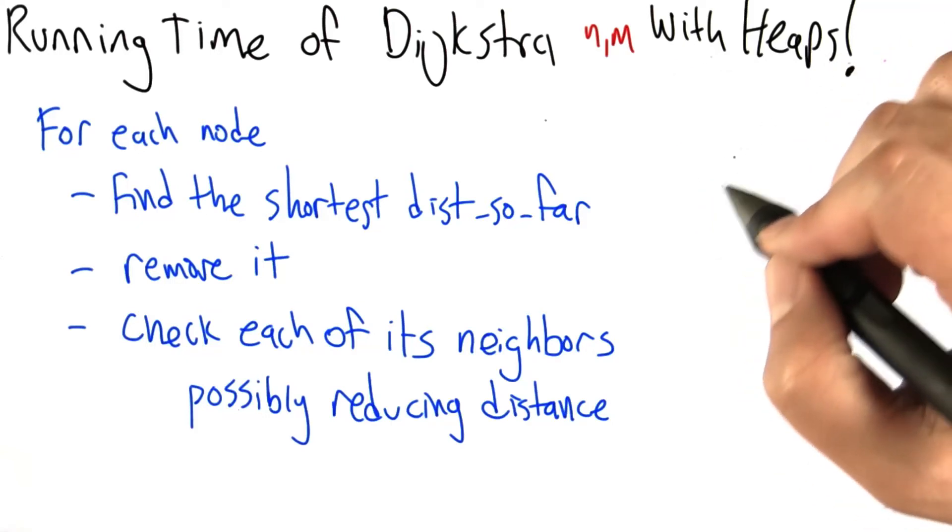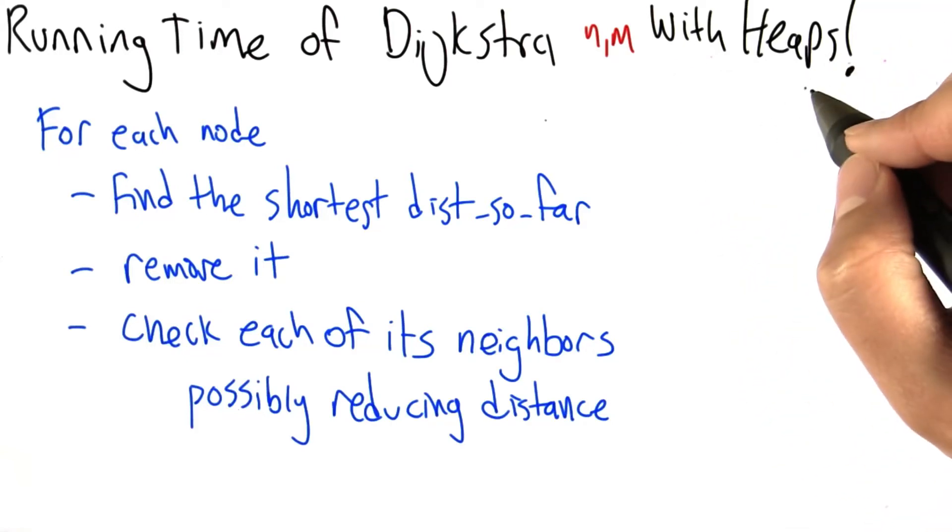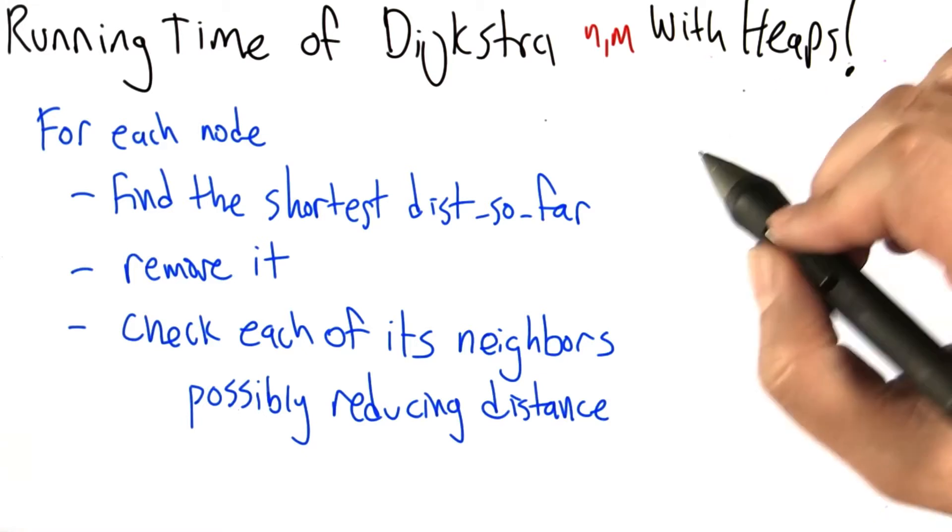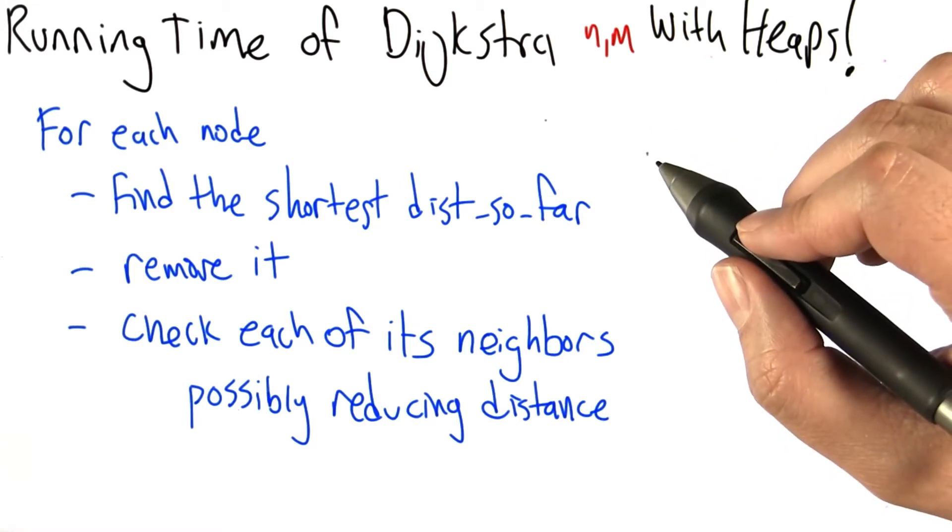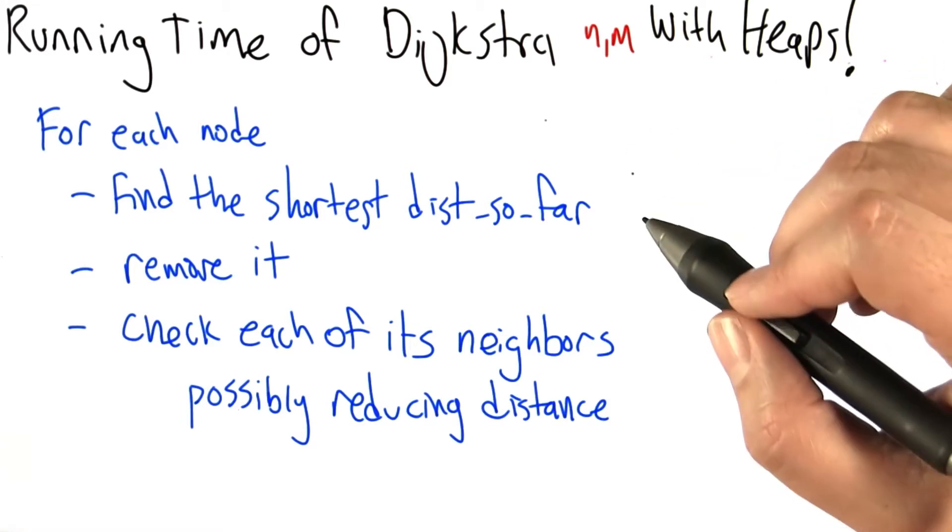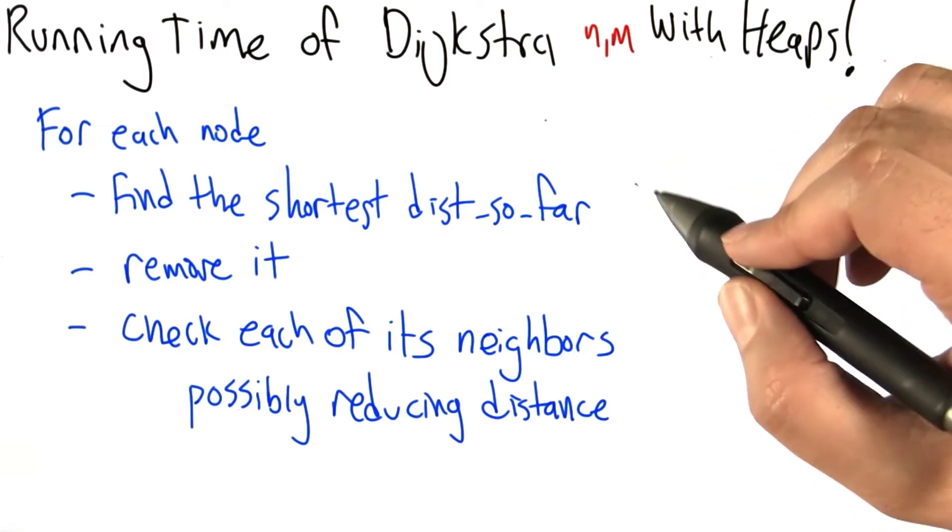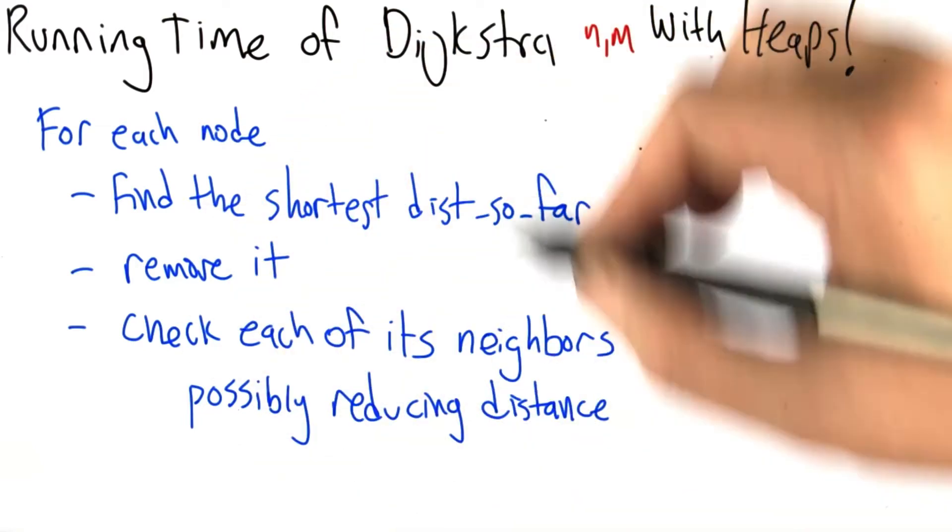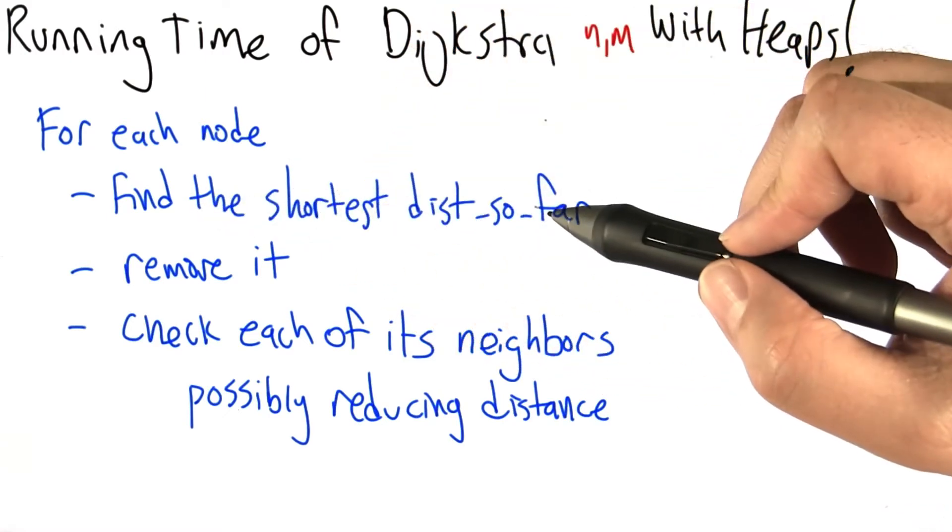Let's look right now at the analysis of the algorithm. So what's the running time of Dijkstra in terms of the number of nodes n and edges m when heaps are used, the kinds of heaps we've been talking about, to be able to find the shortest distance so far so we can lock that down and move on.